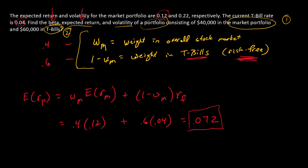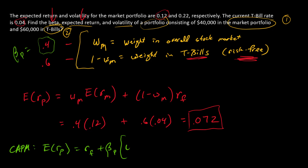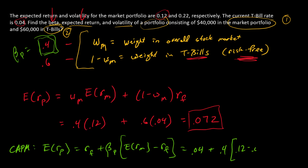We could also use the CAPM to calculate the portfolio's expected return: risk-free rate plus portfolio beta times the market risk premium. Inserting the values — risk-free rate of 0.04, portfolio beta of 0.4, and market risk premium of 0.12 minus 0.04 — we again get 0.072. So we can reach the answer either way.